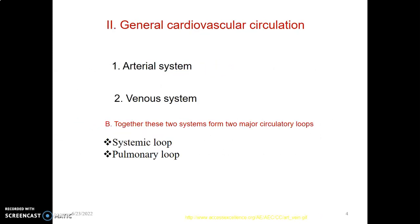So we have the arterial and venous system that form the cardiovascular circulation, and you can also divide it into two loops: the systemic loop in the body and the pulmonary loop. From the right atrium to right ventricle to the lungs — that's the pulmonary loop. From the lung through the pulmonary vein back to the left atrium, then left ventricle to the aorta, then to the body — that's the systemic loop.